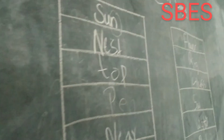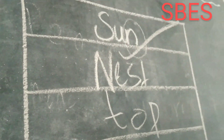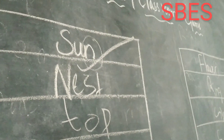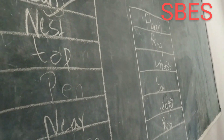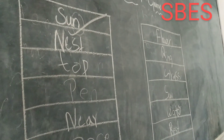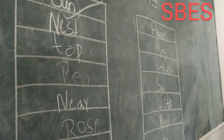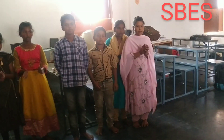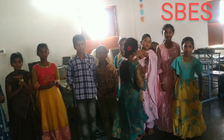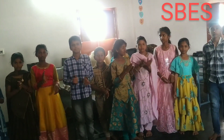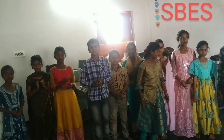See, the sun group is the winner, children. They have written correctly and they have made it fast. That's why the sun group is the winner of this game. Give them a big hand. Okay, thank you.